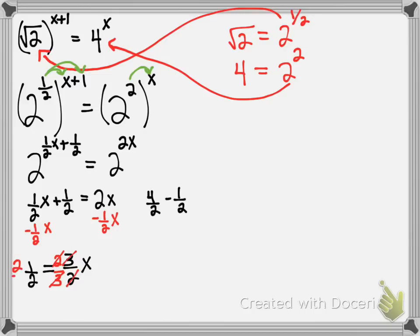I'm going to also do that to the other side, and if you'll notice the 2's there will cancel and that will leave a 1 on top and a 3 on bottom, or one-third. One-third equals x, and that's your answer.